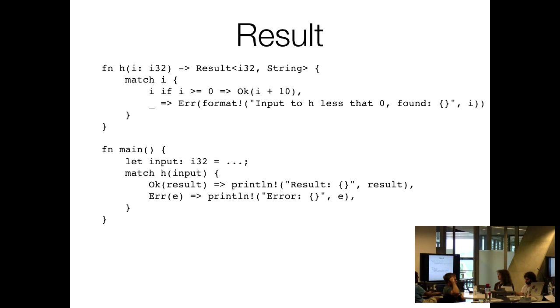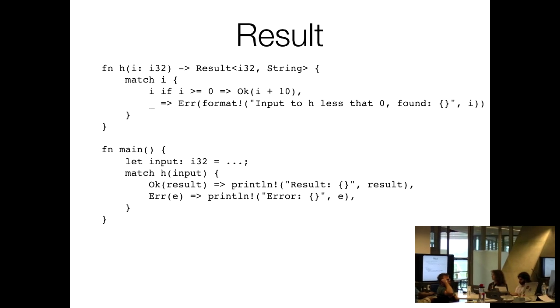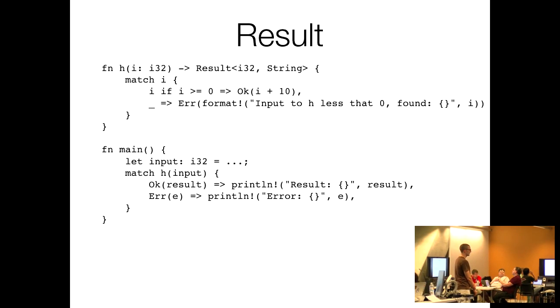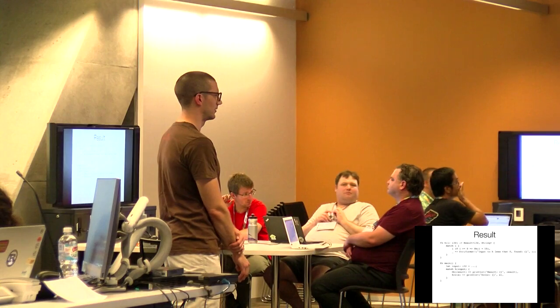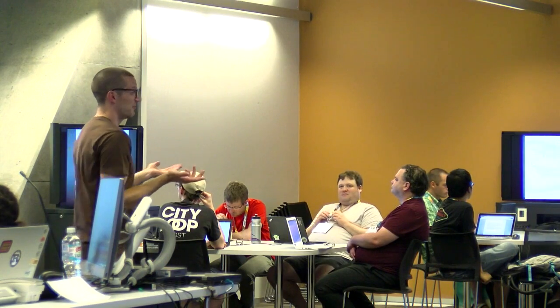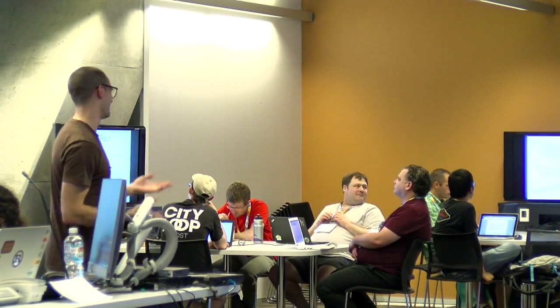Question: why are the type parameters in the order T then E — success type then failure type — and not the other way around? The order of type parameters in Rust is not really important; it doesn't signify anything. We don't have currying or anything like that. And given that, success is more common than error, hopefully, so that's the order it's in.